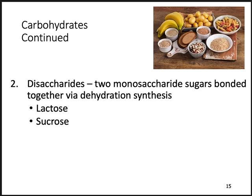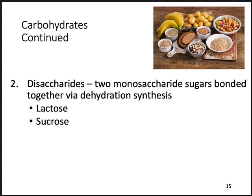Disaccharides are two monosaccharide sugars bonded together using dehydration synthesis. Sucrose (table sugar) is made of glucose and fructose. Lactose is made of galactose and glucose. Lactose is commonly problematic — lactose-intolerant people lack the enzyme to break down lactose, which is found in milk as a milk sugar.